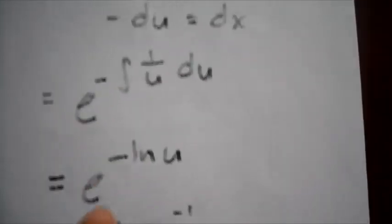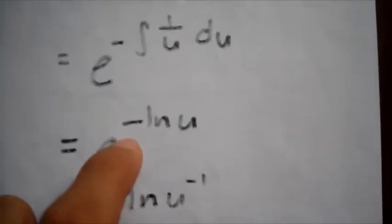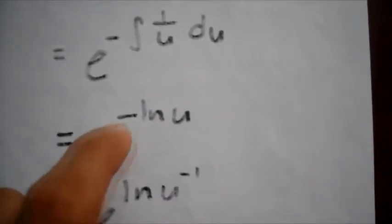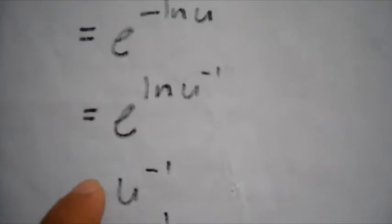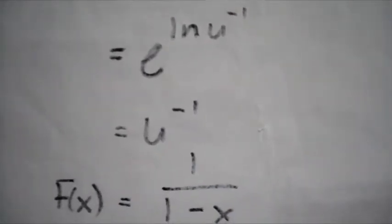And since there is a negative value outside of ln u and this is a constant we can just shift it to make it as the exponent of the u inside. So we have e to the ln of u to the negative 1. Now e and ln cancel out which will just make it into u to the negative 1.